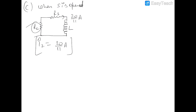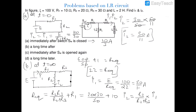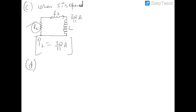This is a very important concept: in any LR circuit, if you are just closing or opening a switch, the inductor keeps the current constant at that instant. After that instant the current will change, but at that same moment it remains the same. For part (d), after a long time: i1 remains 0 (switch is open) and the inductor discharges completely, so i2 also becomes 0.